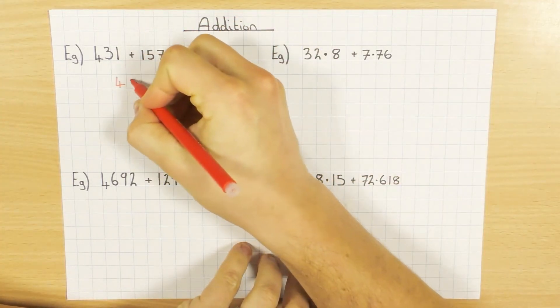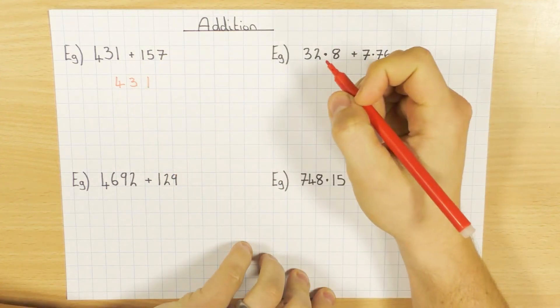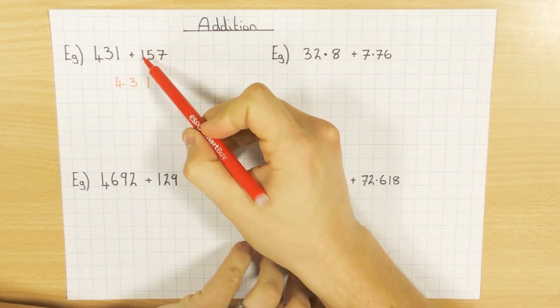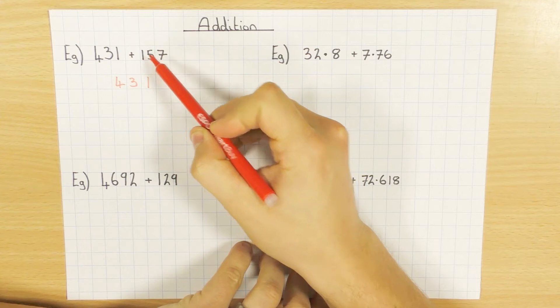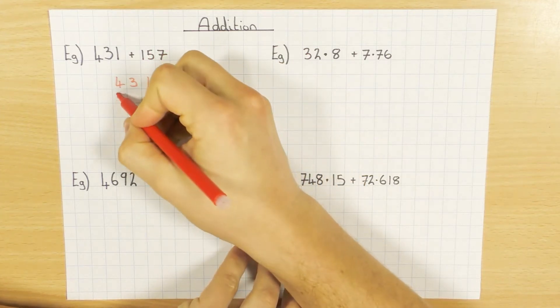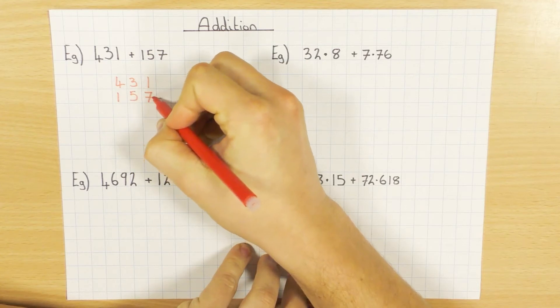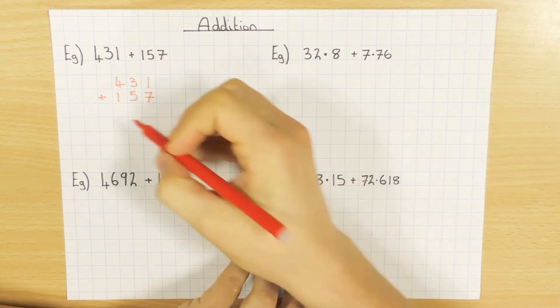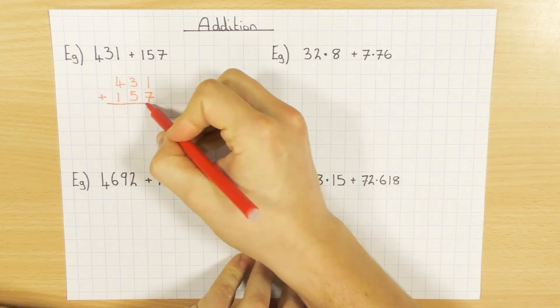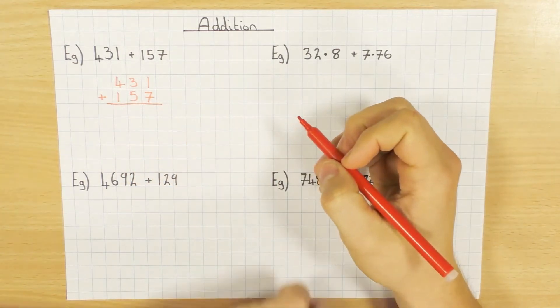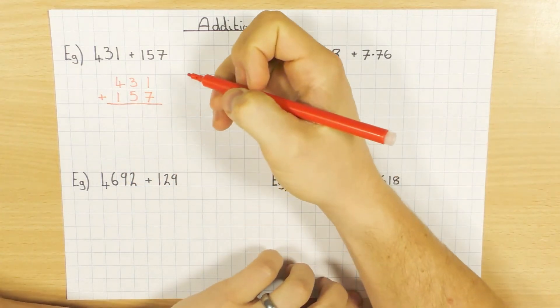So I'm going to put my 431. And remember when you are using the column method, you have to line up the hundreds with the tens and the units as well. So line up the hundreds, the tens and the units. And I'm going to put a little plus here just to remind me that's what I'm doing. And then my little line there just so I know I can separate the answer from the question.